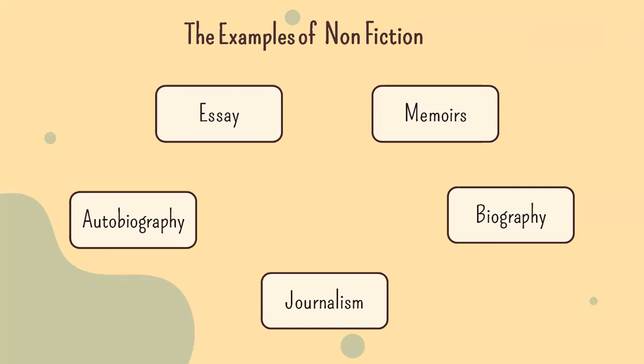Next is biography. Biography is a story written about someone's life. Autobiography is the biography of oneself narrated by oneself. And the last is journalism. Journalism is the activity of gathering, assessing, creating, and presenting news and information.